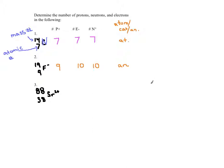For Sr2+, my atomic number is 38, so that tells me I have 38 protons. I have a charge of 2+, which means I have 2 more protons than electrons. Since I have 38 protons, that tells me I have 36 electrons. For neutrons, I take 88 — which is my mass number — and subtract the atomic number from that, and I get 50. Since it's positively charged, we call Sr a cation.